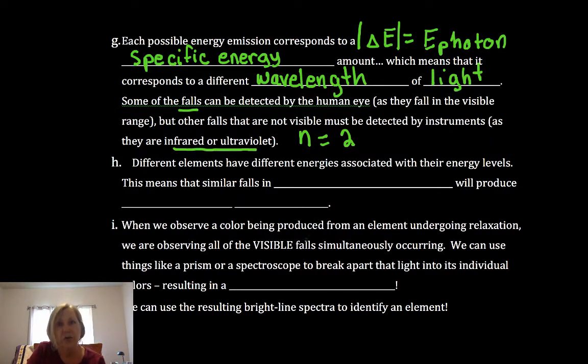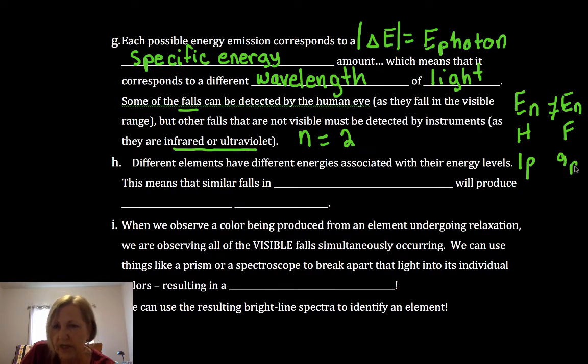Now here's where it gets really cool. So the energy for the energy levels, if I have say hydrogen, are not equal to the energy for those energy levels if I have something like fluorine. That's because hydrogen has one proton, fluorine has nine protons.